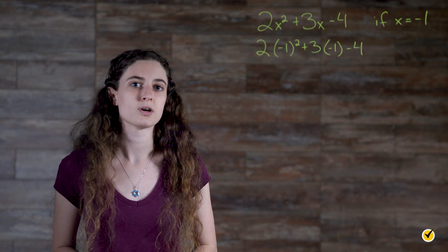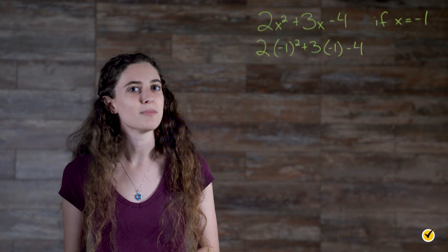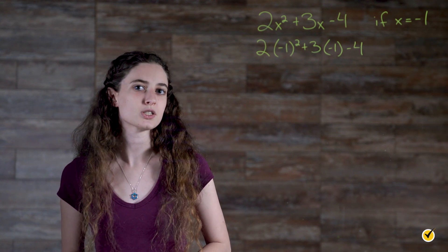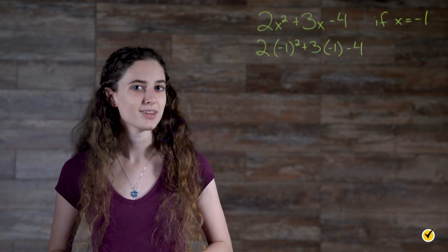If we left them out of the parentheses, we would just have 2 minus 1 squared and 3 minus 1 minus 4. Instead, we have 2 times negative 1 squared and 3 times negative 1 minus 4. Let's work through it.